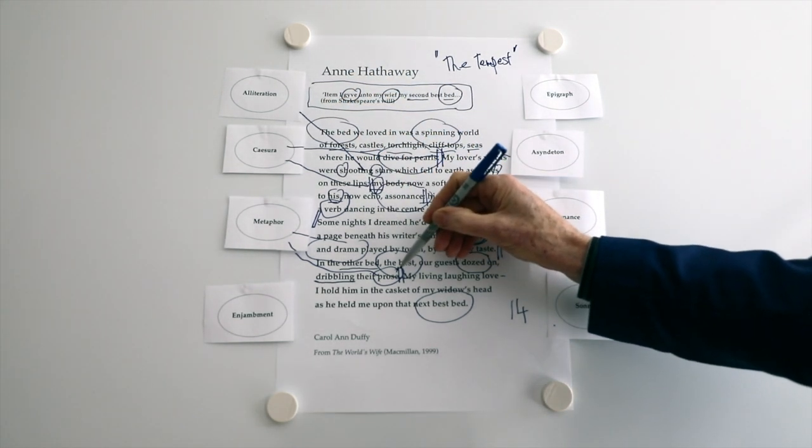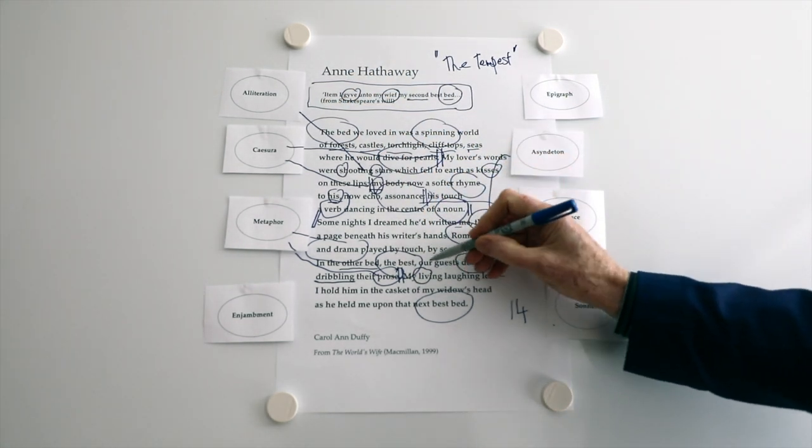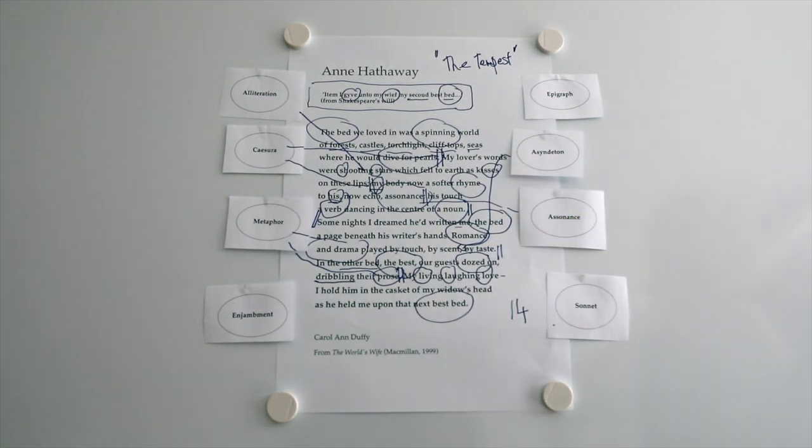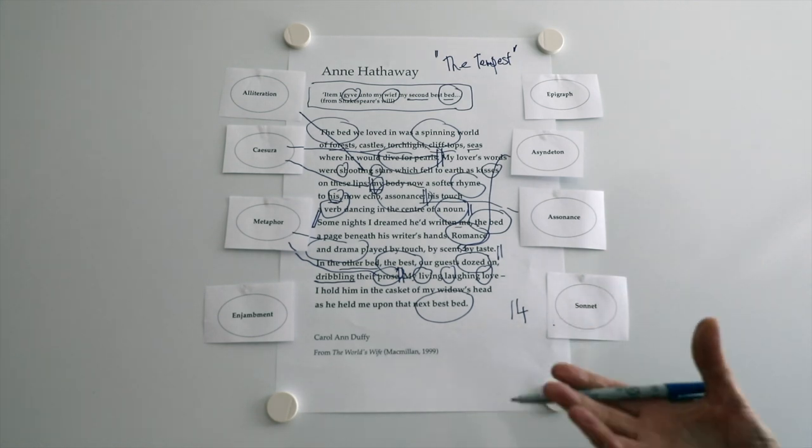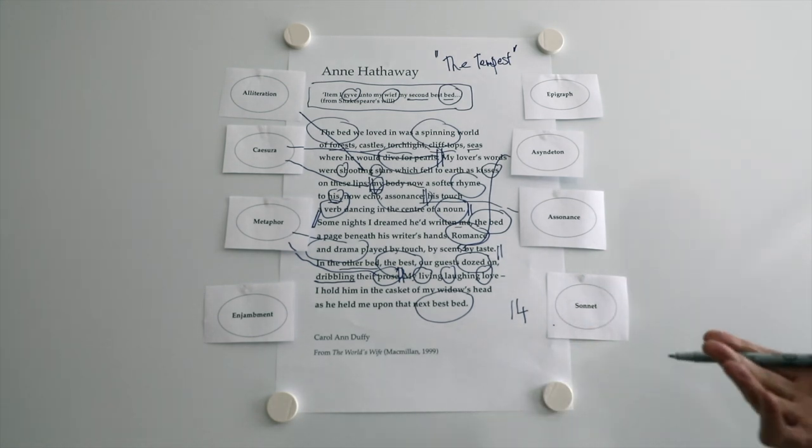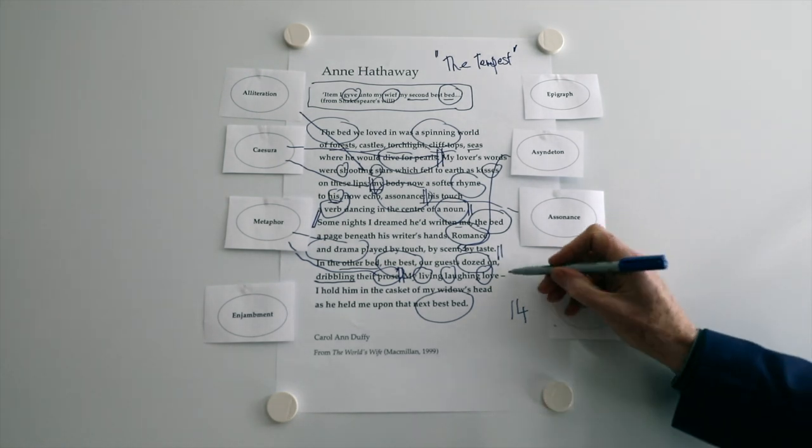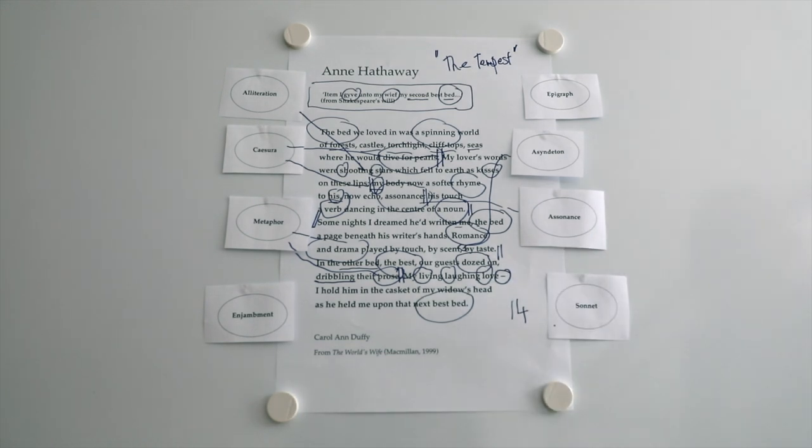And then another caesura. Plenty of these. And then we move into more alliteration. Three here. My living, laughing love. No commas. The poem is just taking the line up. As she enjoys. She loves him. He loves her. He's created her. Perhaps in his poems and dramas. But certainly he can weave the magic of his poetry. And then there's a dash there. A hyphen. Just preparing us for the last two lines.